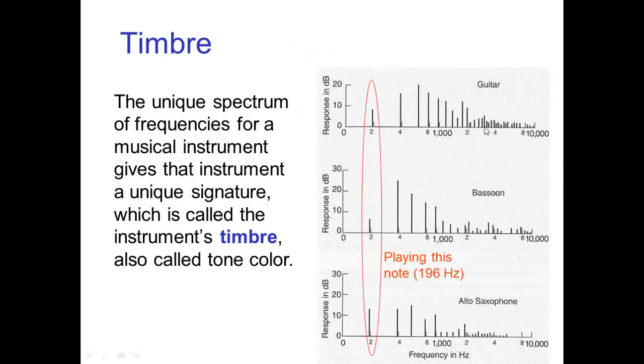And, in fact, this explains why when different instruments play the same note, even though they produce these various frequencies, the entire spectrum of the sound produced by, say, a guitar when it plays a note is different from, say, a bassoon or an alto saxophone playing that same note. And this unique spectrum that you have with a musical instrument is the instrument's signature, which is called the timbre or the tone color.